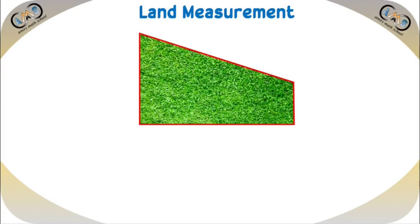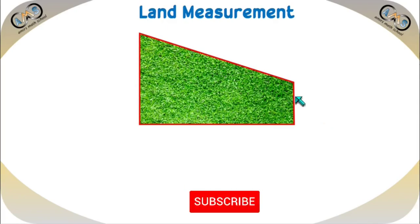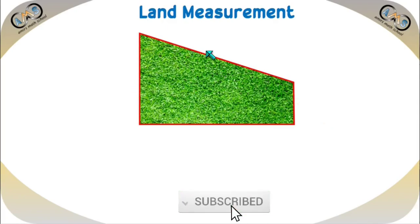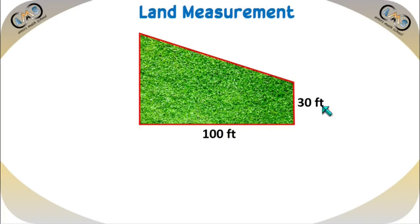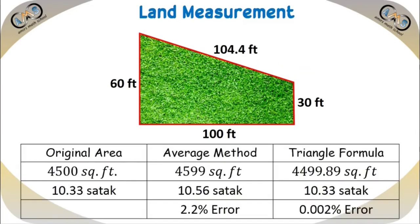Suppose this one is a land. This type of land is trapezium type. The opposite sides are parallel but not equal, and the other two sides are also not equal. Suppose this length is 100 feet, this length is 30 feet, this length is 60 feet, and this length is 104.4 feet.